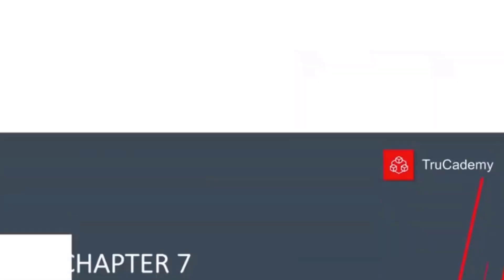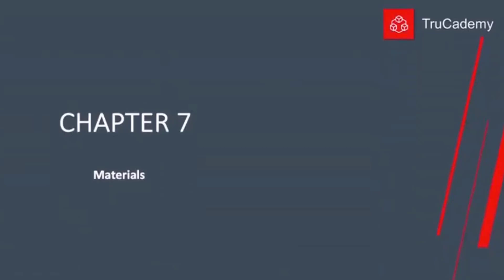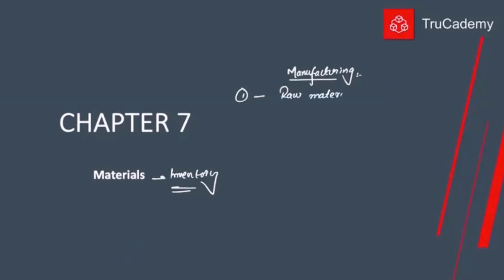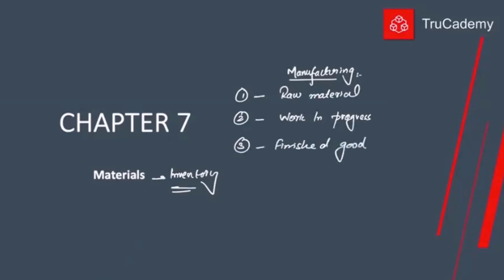In Chapter 7 we will be talking about materials. When we say materials, especially in a manufacturing organization, materials refer to inventory. There are three different types of inventory: first is raw material, second is work in progress, and third is finished goods.